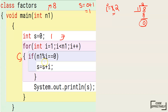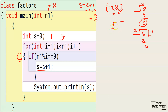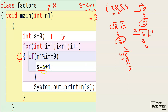For i equals 2: s equals s plus i, so 1 plus 2 equals 3, s is now 3. Next, i becomes 3. We check 8 modulus 3: 3 twos are 6, remainder is 2. 2 is never equal to 0, so condition is false. Now i becomes 4. We check 8 modulus 4: 4 twos are 8, remainder is 0. Condition is true, so s equals s plus i — 3 plus 4 equals 7. s is now 7.